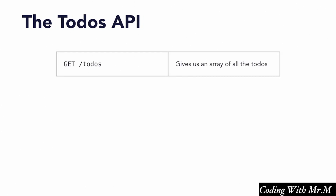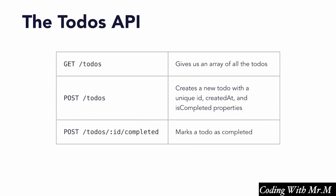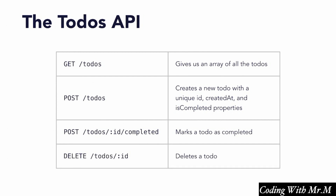Here are the basic things we can do with our server. We can send a GET request to /todos, which will send us back an array of all our current to-dos. We can send a POST request to /todos with a payload that contains the text, and the server will create a new to-do with a unique ID, as well as createdAt and isCompleted properties, and return the entire to-do item as the response. We can also send a POST request to /todos/:id/completed to mark a given to-do as completed. And finally, we can send a DELETE request to /todos/:id to delete the to-do with the given ID, and this endpoint will send the deleted to-do object as a response.